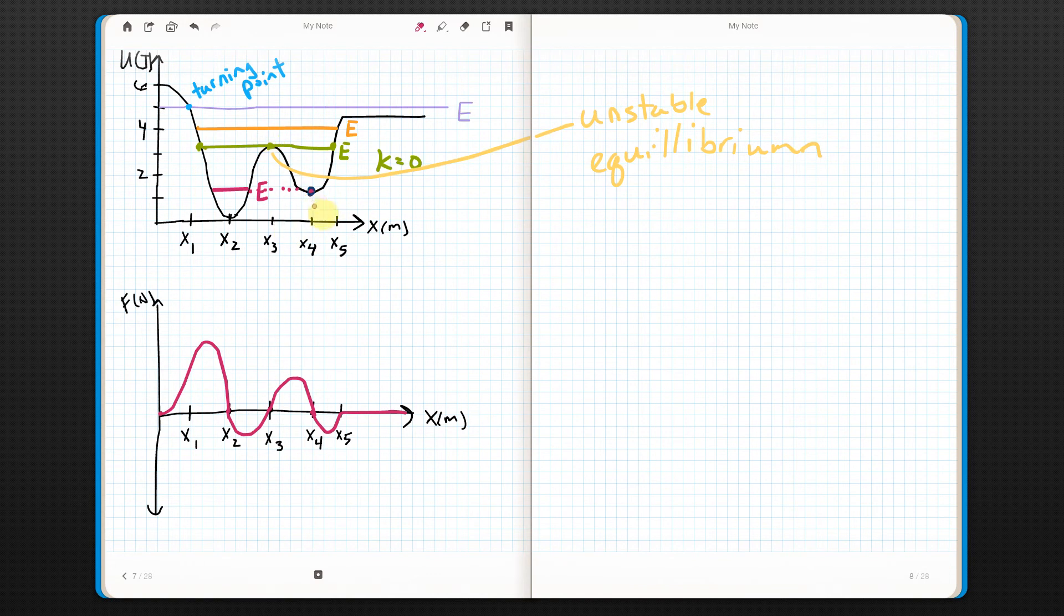If we put a particle at x4 with pink energy, whatever the number that is, what I would have then is I would have all of my energy taken up by potential energy. So, again, I would have kinetic equals zero.